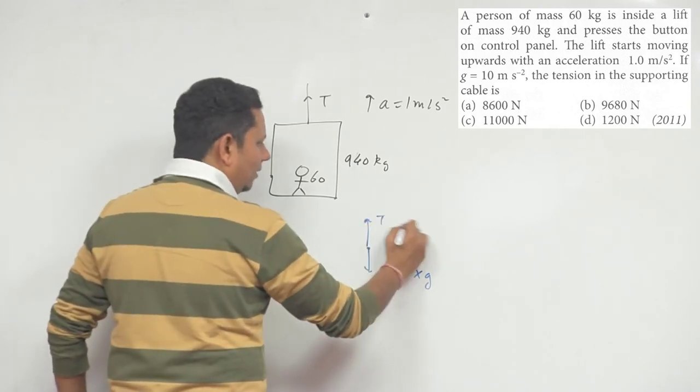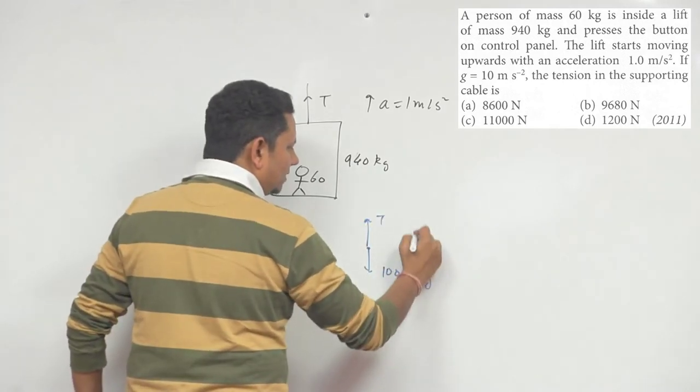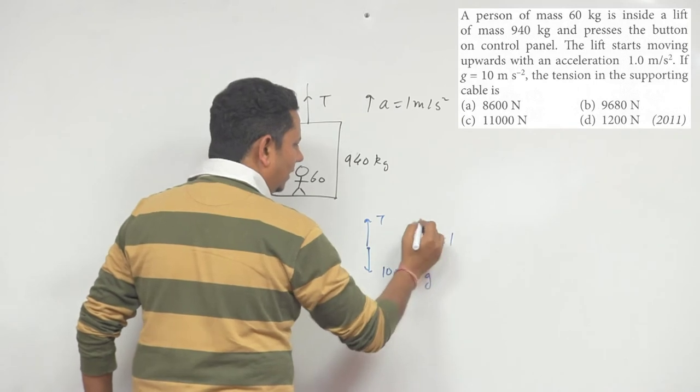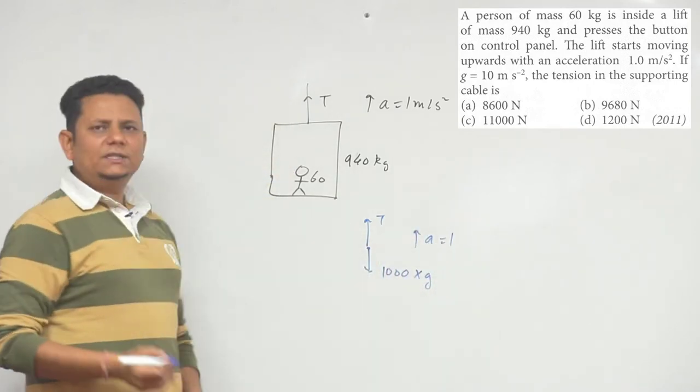There will be tension T upward, and the whole system has acceleration A which is 1. From the FBD basis,